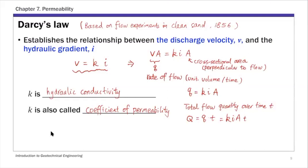This is where we stopped last time. I introduced Darcy's law, which relates discharge velocity v to the hydraulic gradient through a constant we call hydraulic conductivity. In civil engineering, it's more commonly called coefficient of permeability, or simply permeability. So that's where we started last time, and the first thing I want to go over today is discharge velocity. In Darcy's law, this velocity is called discharge velocity, Darcy's velocity, or apparent velocity.